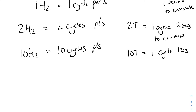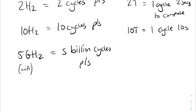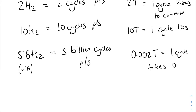Let's go to five gigahertz — a very large number. You might recognize five gigahertz from your Wi-Fi. We have 2.4 gigahertz Wi-Fi and five gigahertz Wi-Fi. As a waveform, five gigahertz means you get five billion cycles per second — which is incredible. How about 0.002T? That means one cycle takes 0.002 seconds, or in other words, two milliseconds to complete.